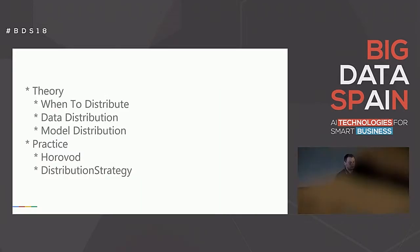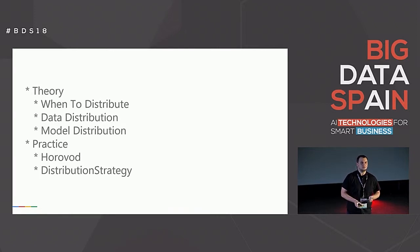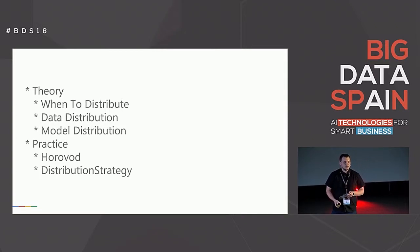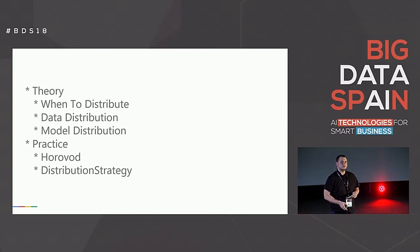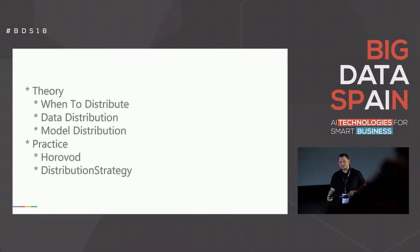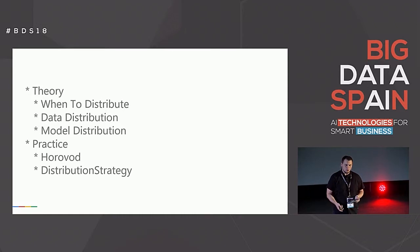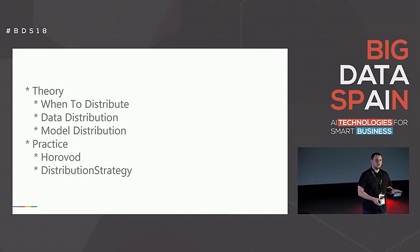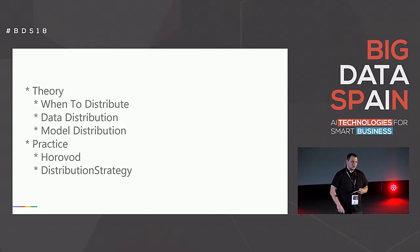Let's jump to the agenda. We split the talk into two parts. First, we're going to cover the theory of distributed training. Inside the theory, I want to answer two simple questions: how you can do distributed training, and which type of distributed training you need to pick, and why. Then we will see in practice how you can apply all of them with TensorFlow — and more importantly, how you can take some legacy model implemented five years ago and use modern practices of distributed training.